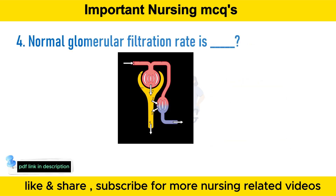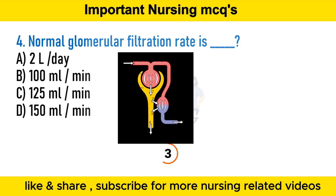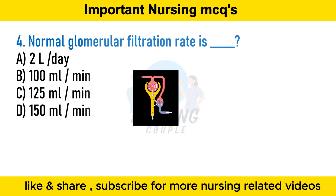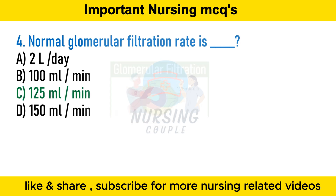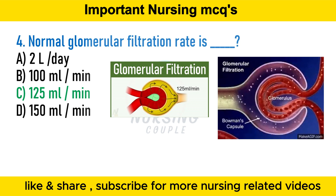The normal glomerular filtration rate is: option A two liters per day, option B 100 ml per minute, option C 125 ml per minute, option D 150 ml per minute. The answer is option C, 125 ml per minute. Glomerular filtration is the first step in making urine.